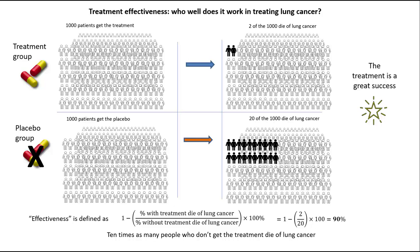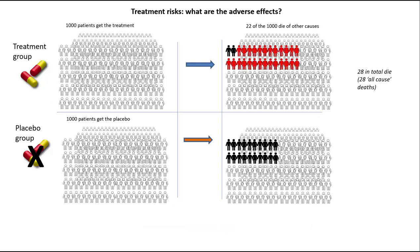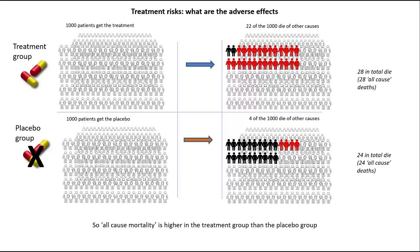But we also have to consider the adverse reactions — how many people in each group die from other causes than lung cancer during the same period? Suppose in the treatment arm, 26 people die of other causes, making the total all-cause deaths 28. But in the placebo arm, only 4 die of other causes, giving 24 all-cause deaths in total. Then the all-cause mortality is higher in the treatment group than in the placebo group, so the risks outweigh the benefits because the treatment is killing more people than it's saving.